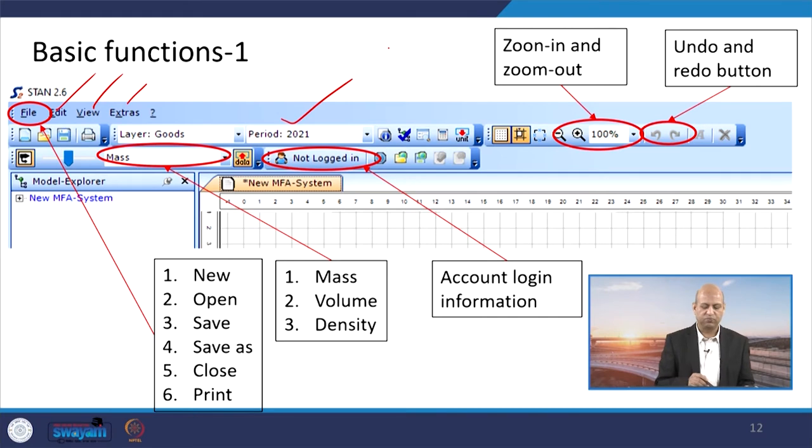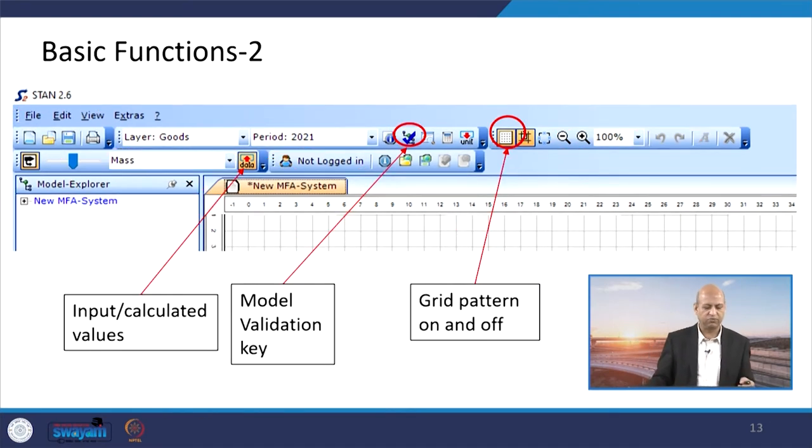Similarly, period you can choose from year 2021 or whatever year you want to use. Layers may be goods or any other like services or different kind of freight products. Zoom in, zoom out, you can do redo, undo, those kind of buttons. All simple, whatever Windows features are there, all those features are available here.